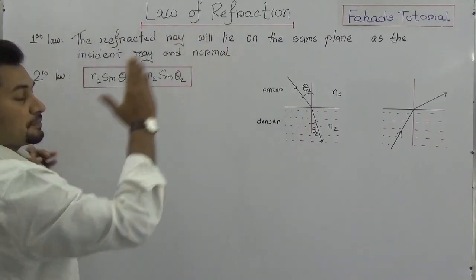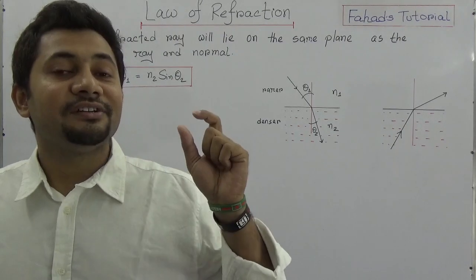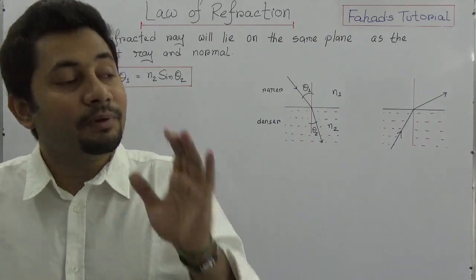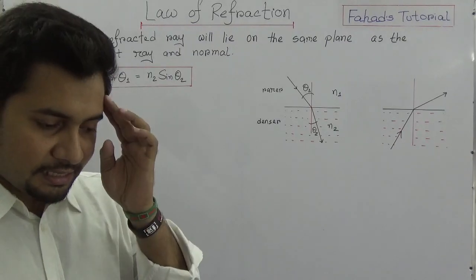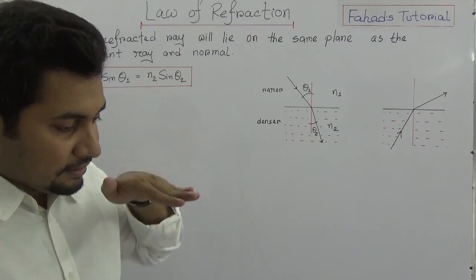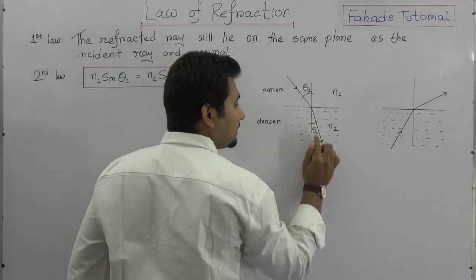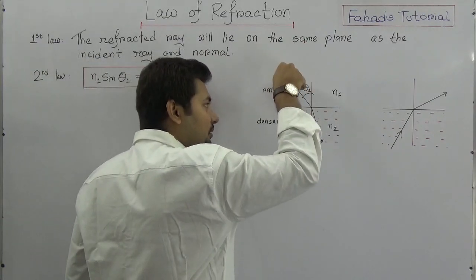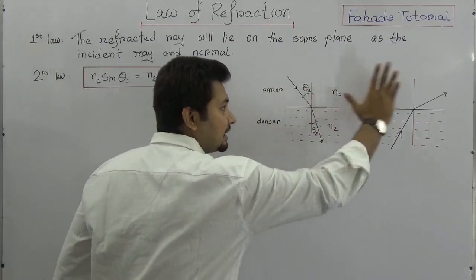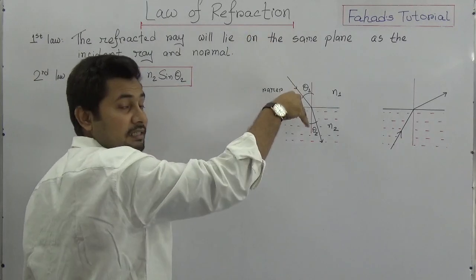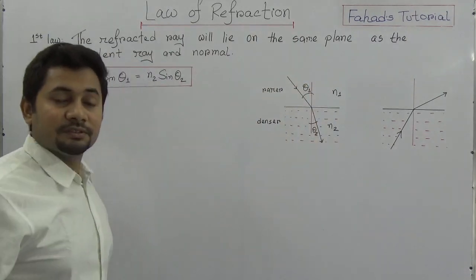What is the first law? The first law states that the refracted ray, the incident ray, and the normal will lie in the same plane. It is very simple to understand: the incident ray is falling, there is a surface of separation, on the surface of separation there is a normal, and this is the refracted ray. All three are actually in the same plane, like the board that I am drawing. So all these three lines are lying in the same plane. This is the first law.